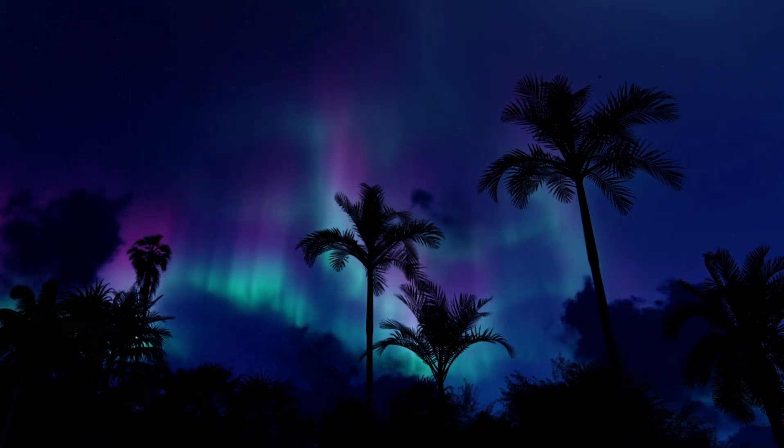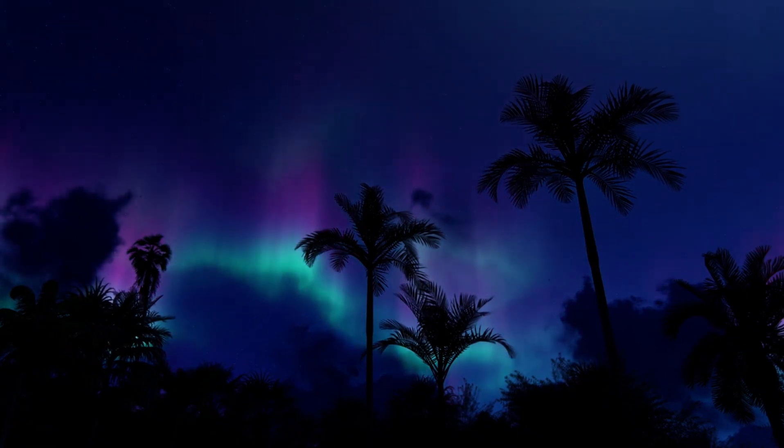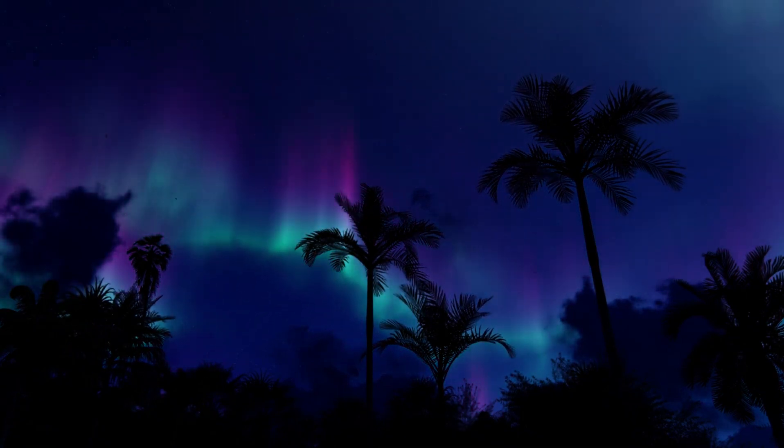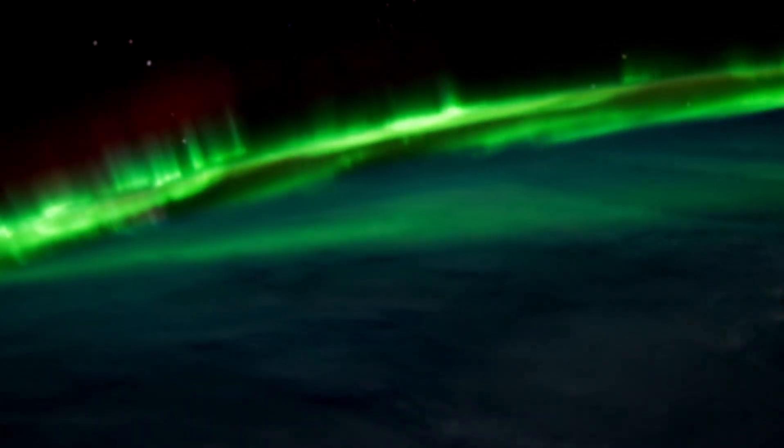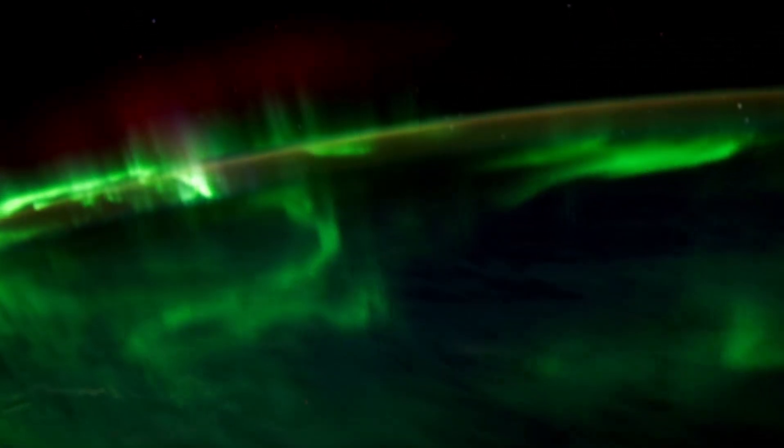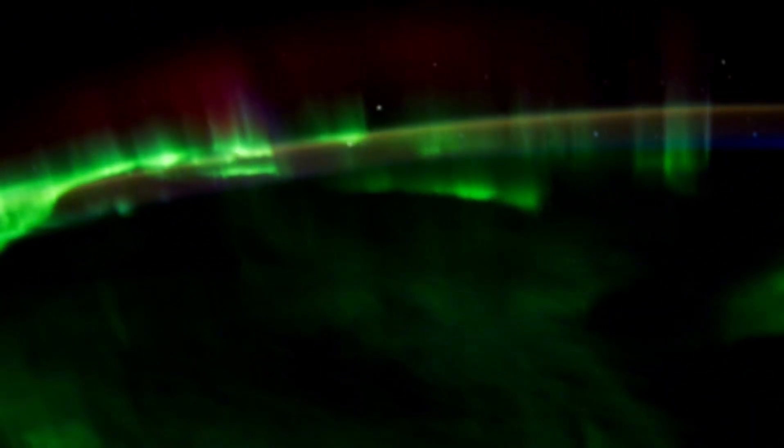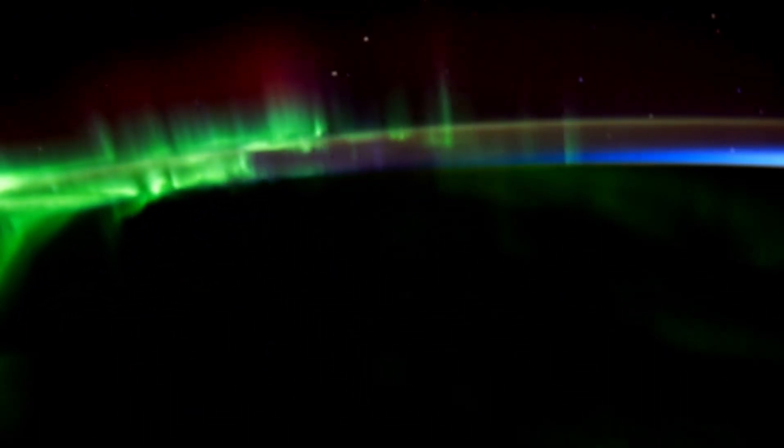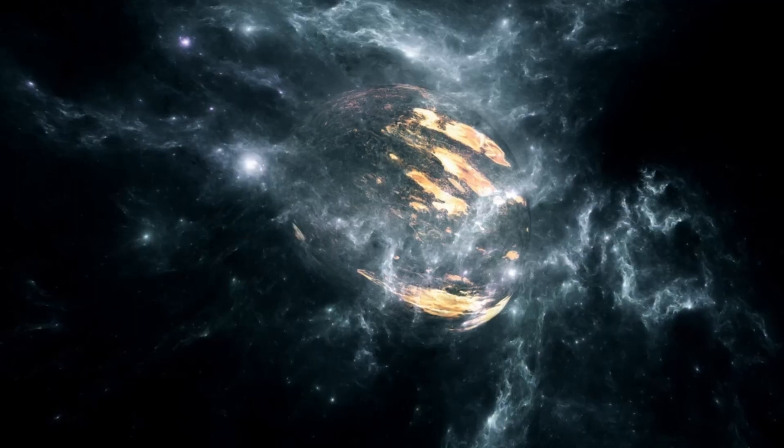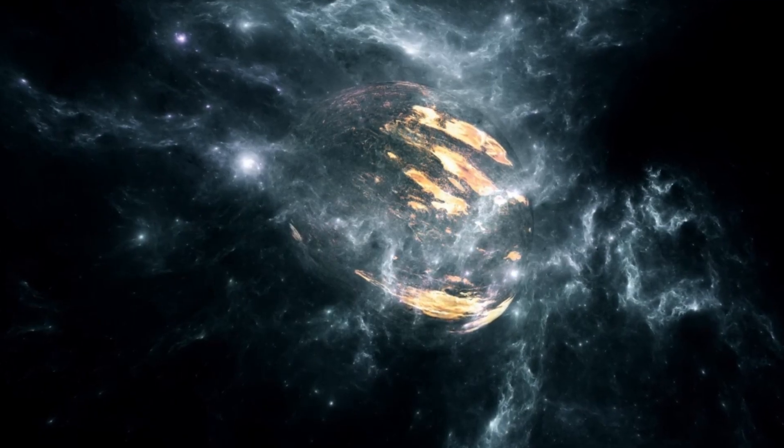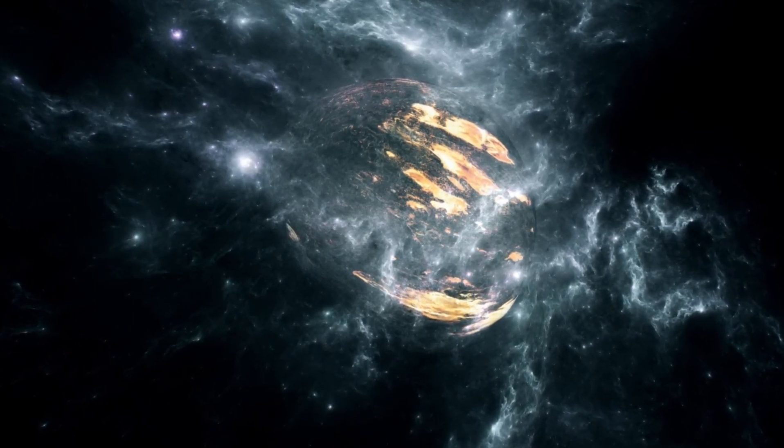Unlike lighter elements, the fusion of iron does not produce energy. As a result, the core becomes unstable and collapses under its own gravity, triggering a catastrophic explosion. This type of stellar explosion, known as a type 2 supernova, is characterized by a rapid release of energy, radiation, and stellar material.